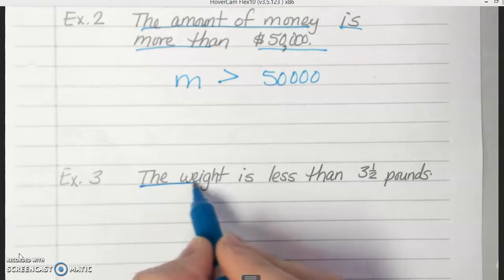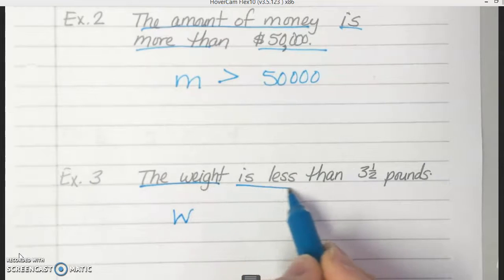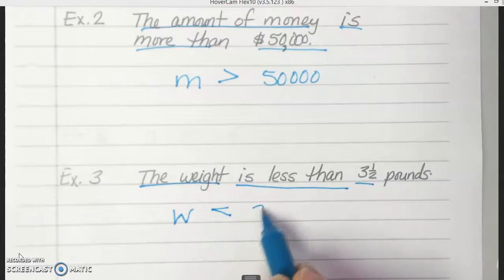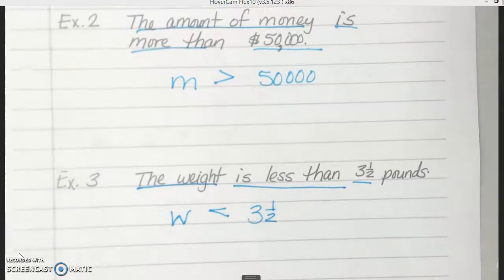So right here we have the weight. So we're going to use W for weight. Is less than. And then here's our three and a half. It's not very complicated. It's just taking the sentence and putting it in less than, greater than or equal to, and using variables and numbers there instead of the words.